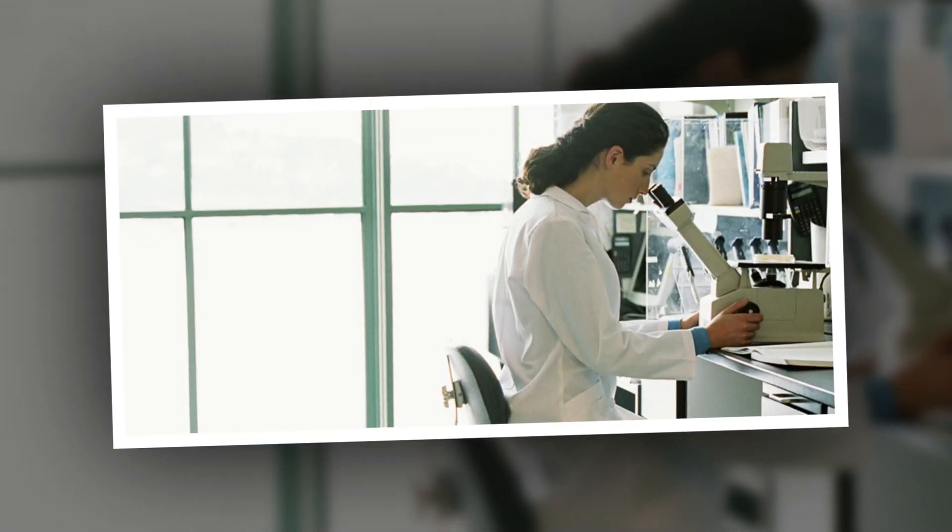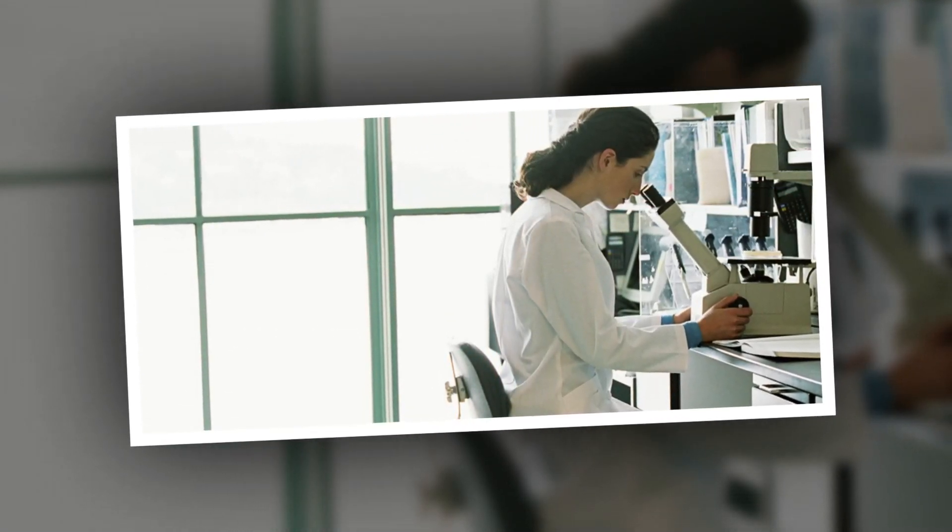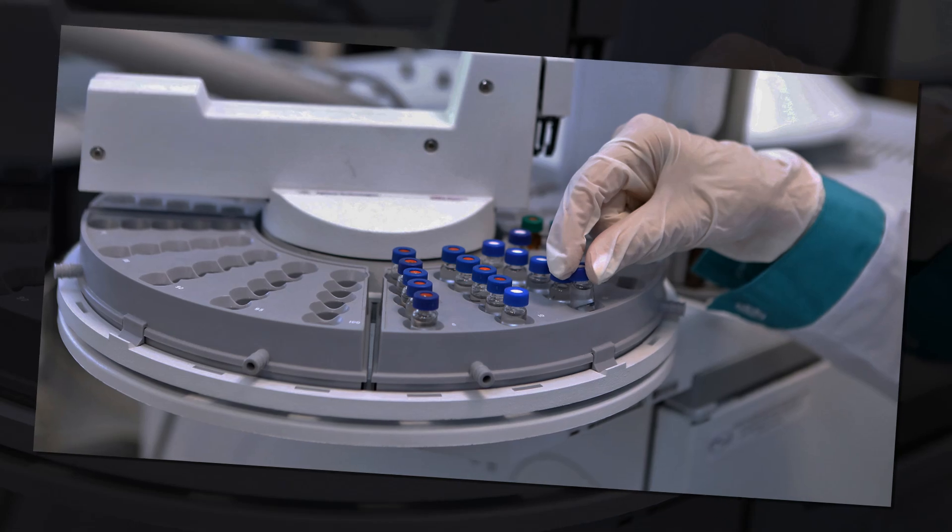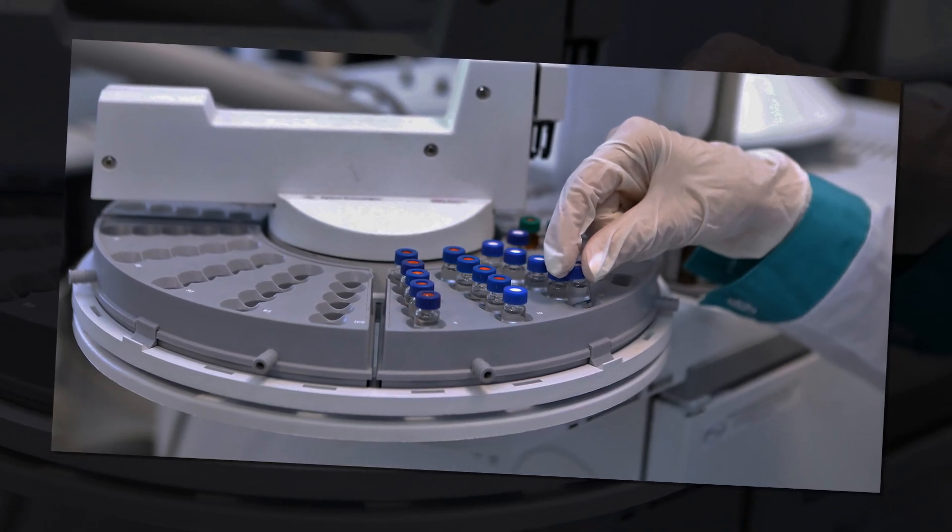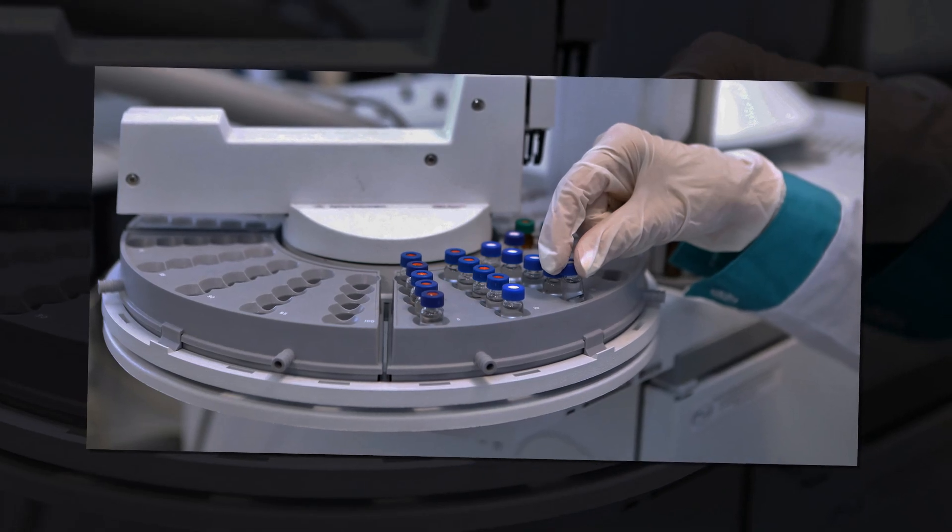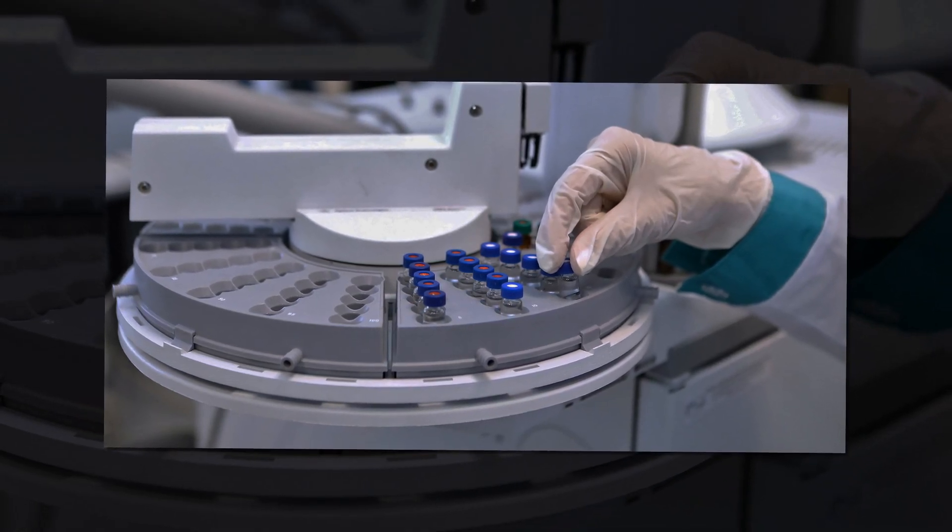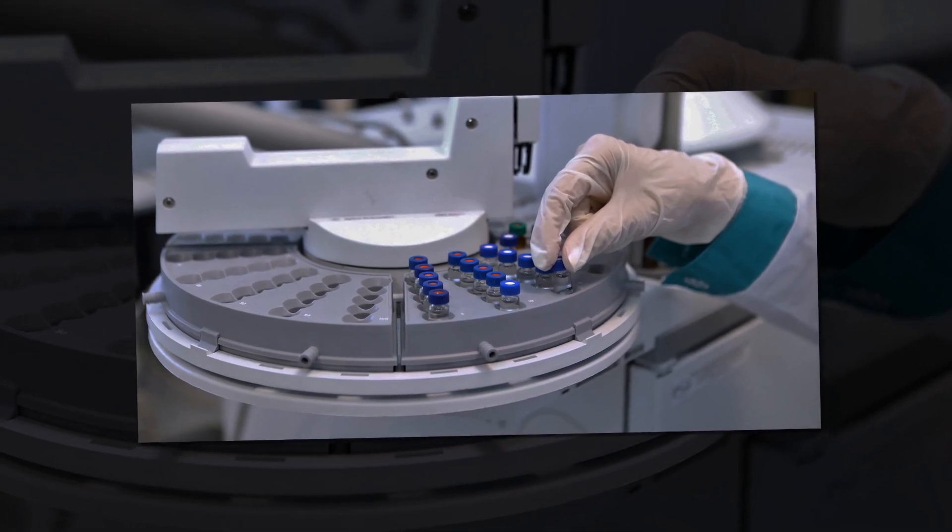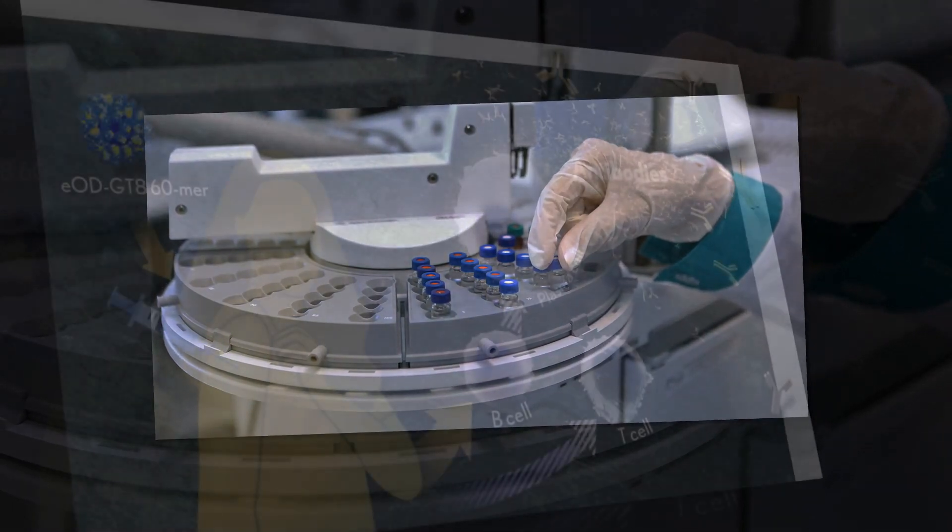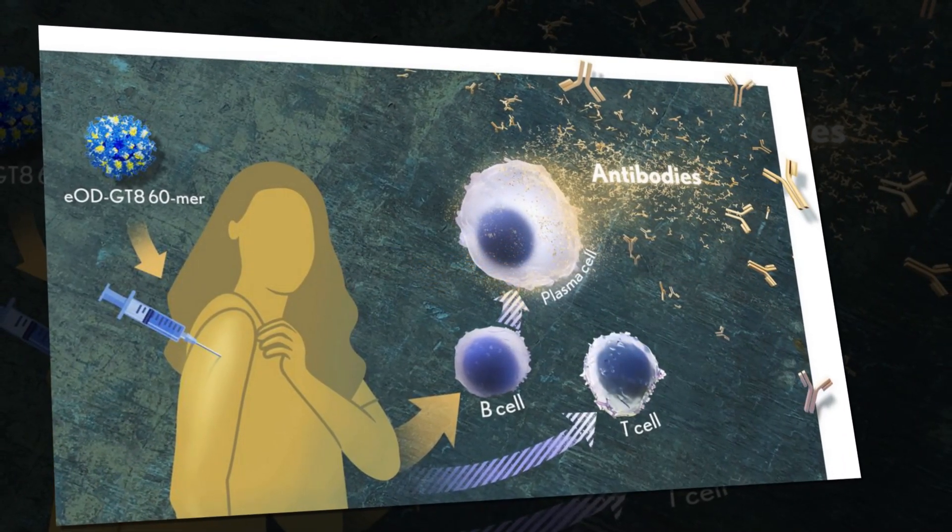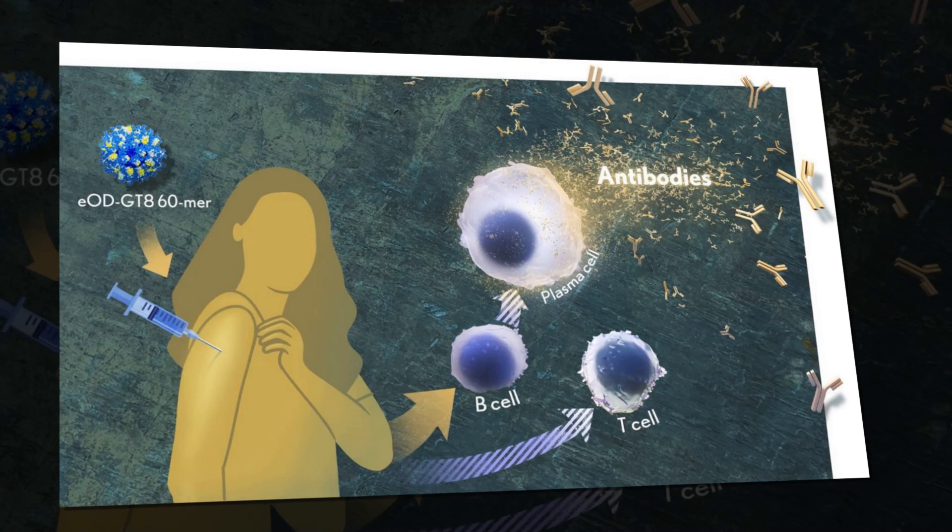First, a primer vaccine selectively recruits capable naive B cells. They migrate to germinal centers in lymph nodes to mature, and a sequence of boosters helps them learn to recognize the right targets and make effective bnAbs. As Sanders and Moore describe it, an initial germline-targeting immunogen primes desirable naive B cells, a suitably modified second immunogen shapes the now memory B cells, and then a final polishing immunogen completes the bnAb maturation process.